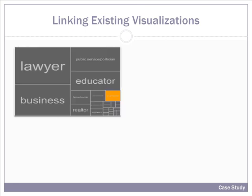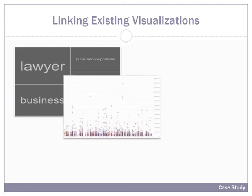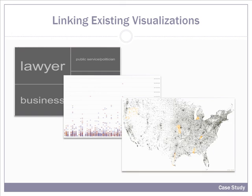To demonstrate the extensibility of VisLink, we have used it to link existing visualizations, including a tree map of the occupations of members of Congress of the United States, a scatter plot indicating individual members' fundraising success, and a map of the United States indicating the zip codes that elected members represent.